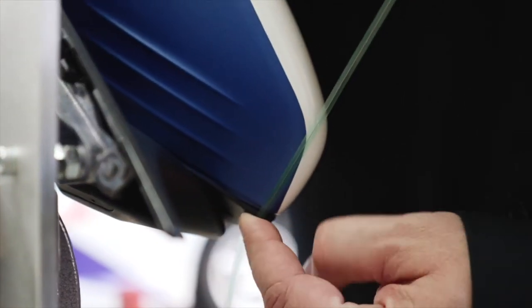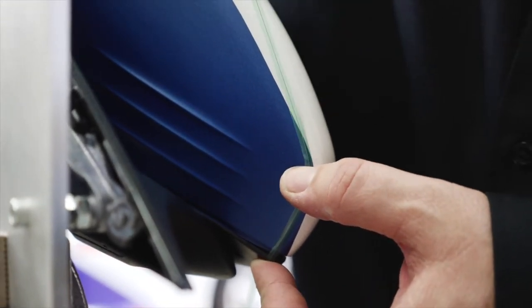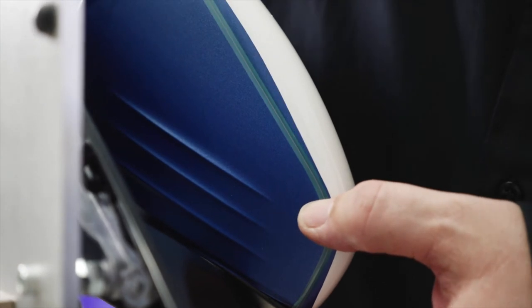Once again, using knifeless tape design line, apply the tape approximately 1mm from the edge of the film. Press the knifeless tape onto the film.